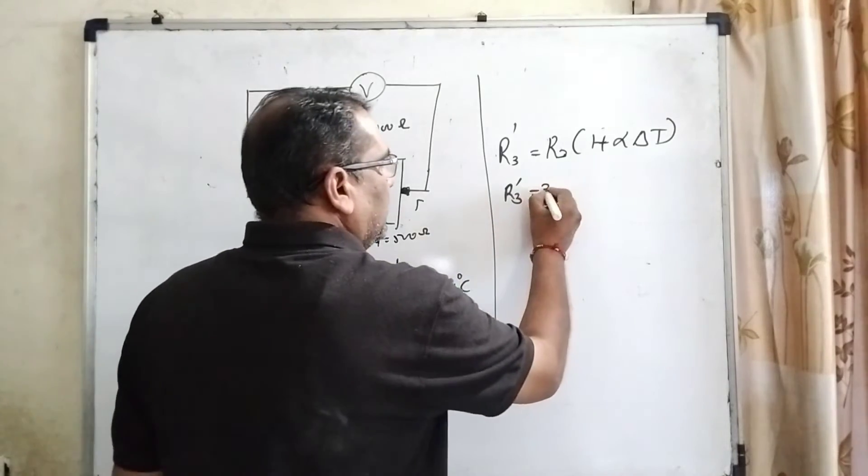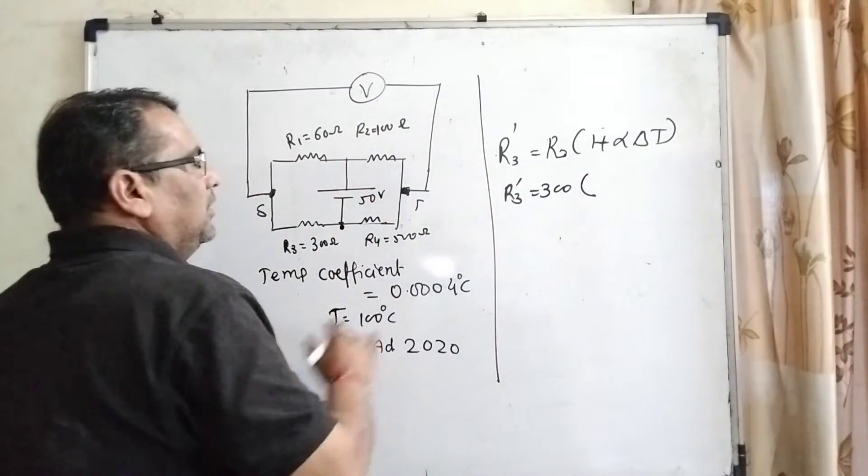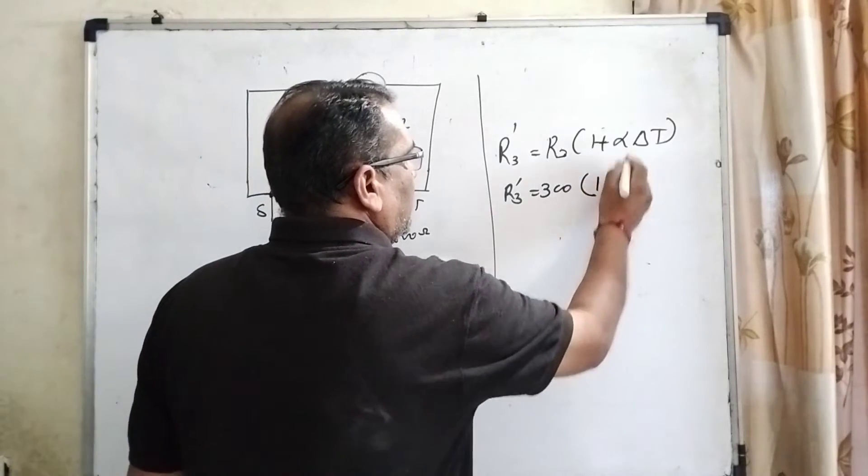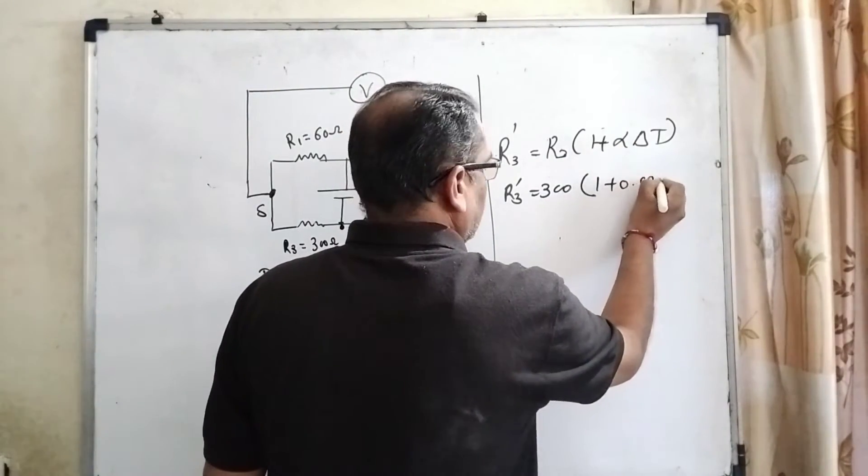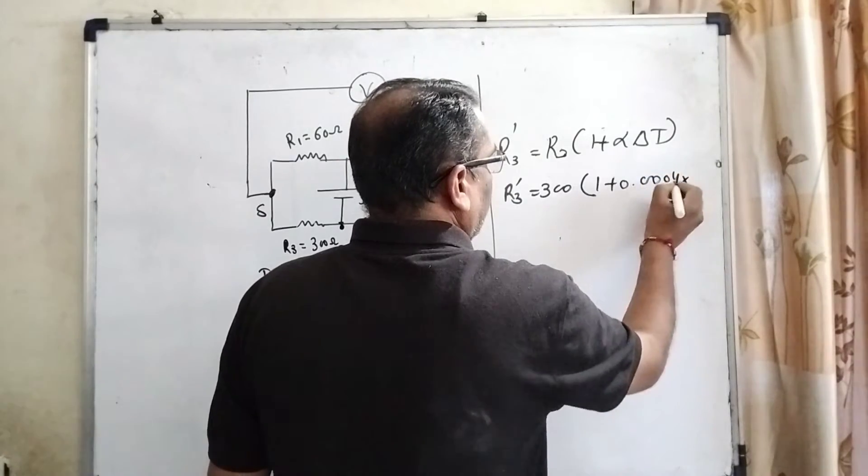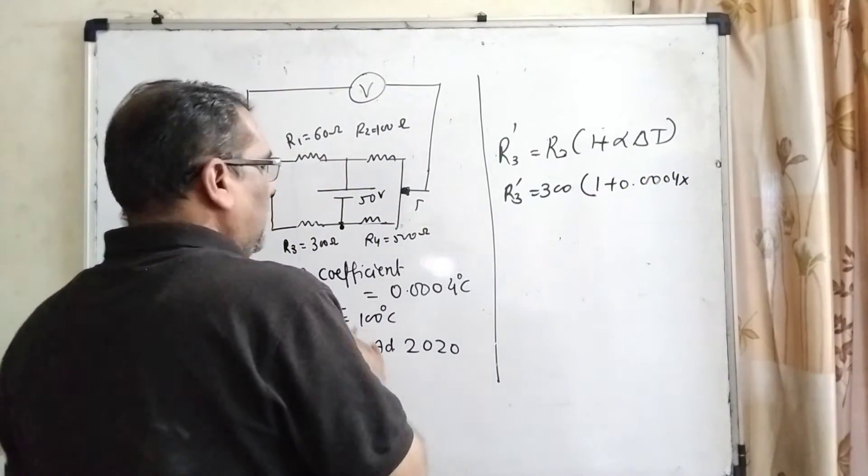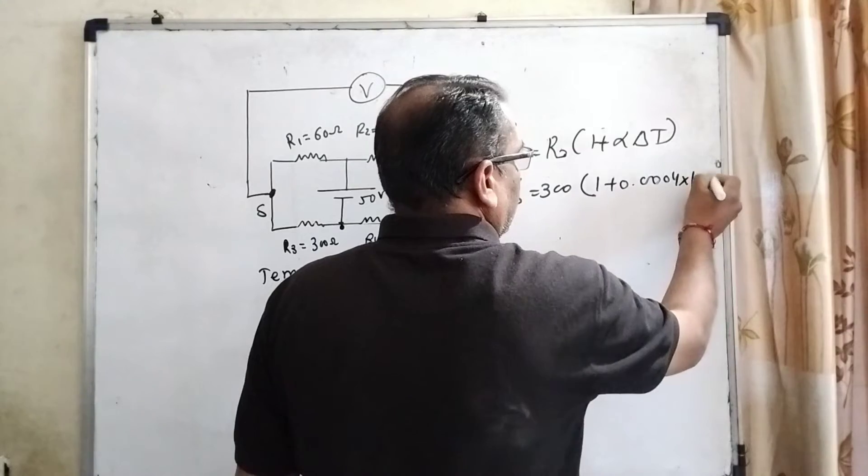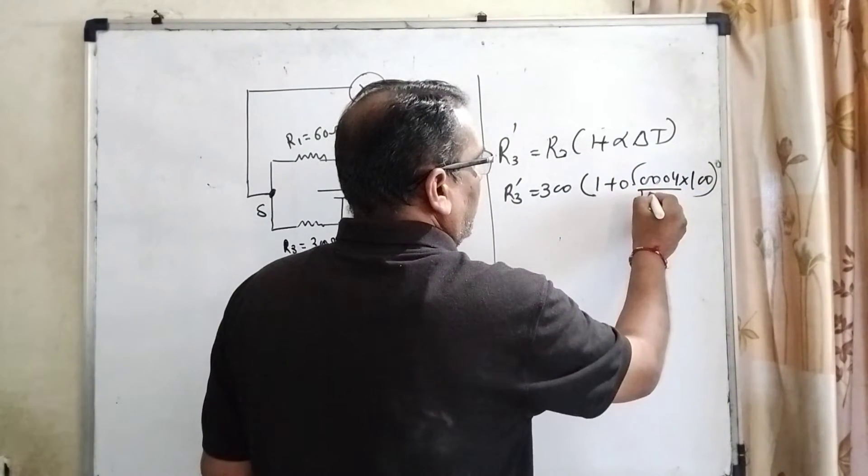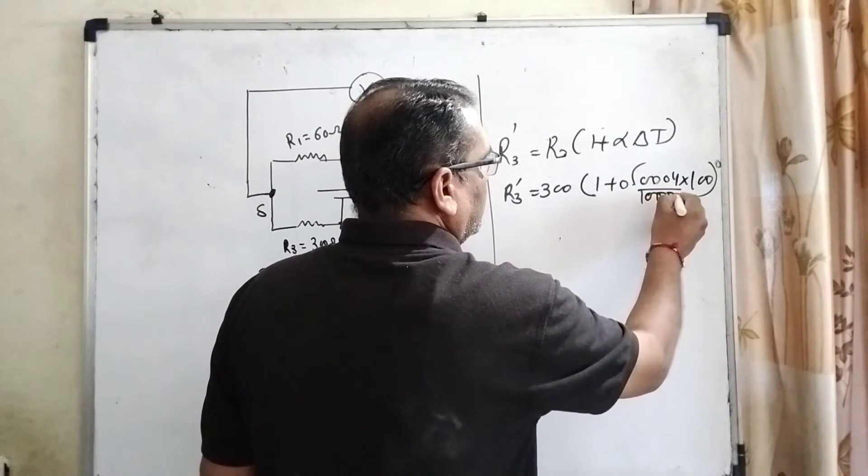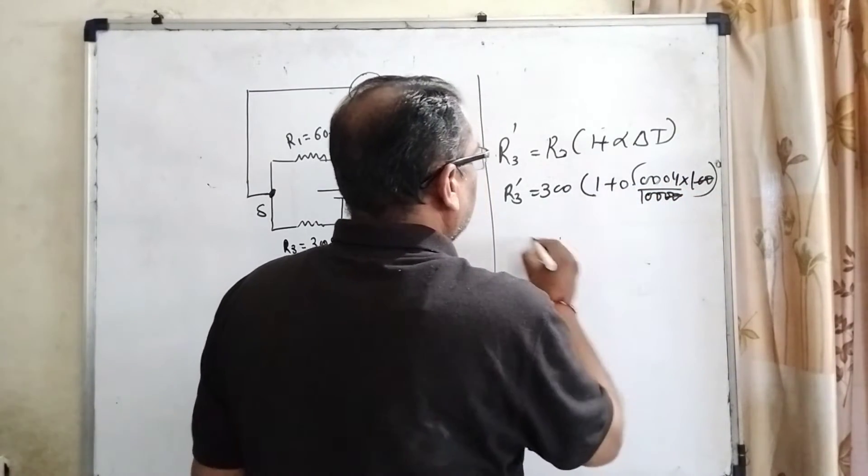So now this becomes 300, the initial resistance, times (1 plus alpha). What is alpha? Alpha is 0.0004 and temperature raised is 100 degrees Celsius, so 100. Now 1, 2, 3, 4... these zeros will cancel out.